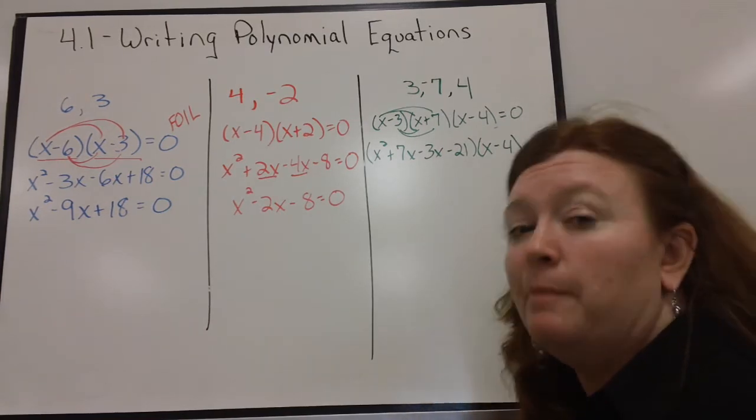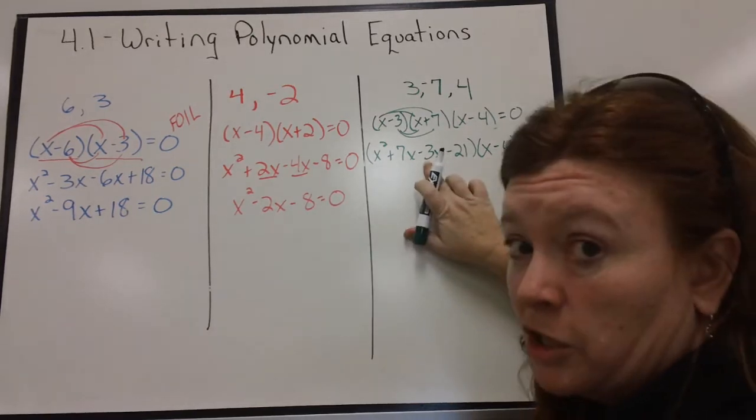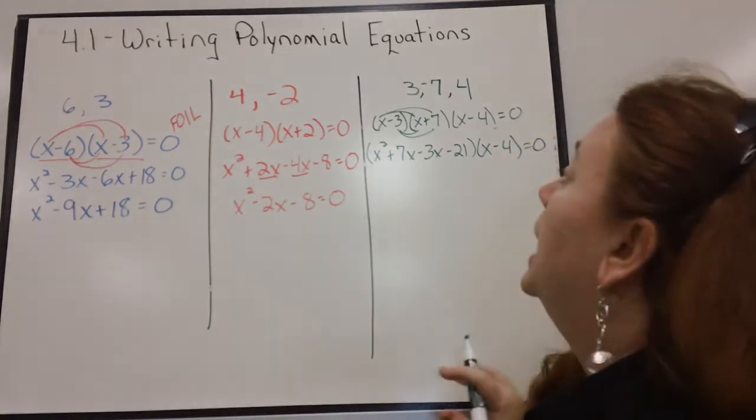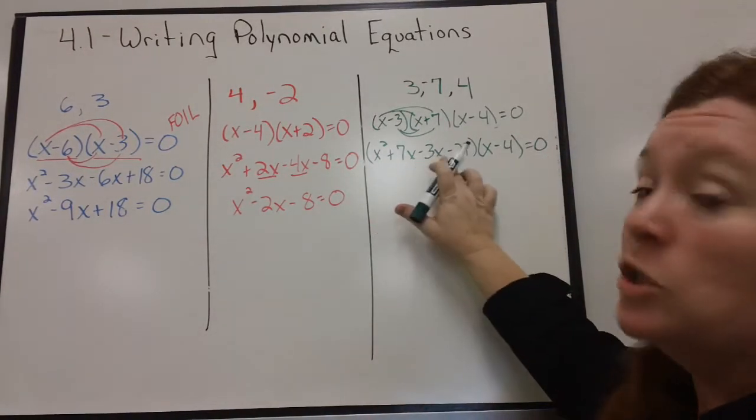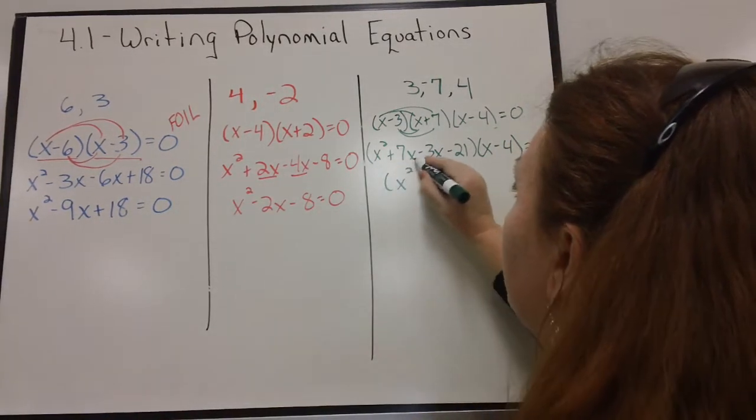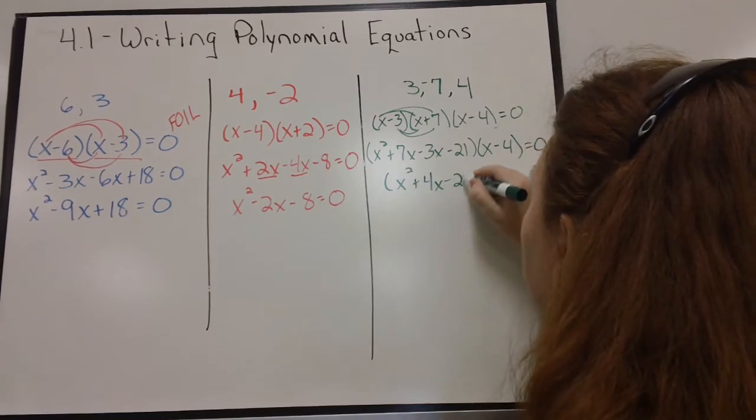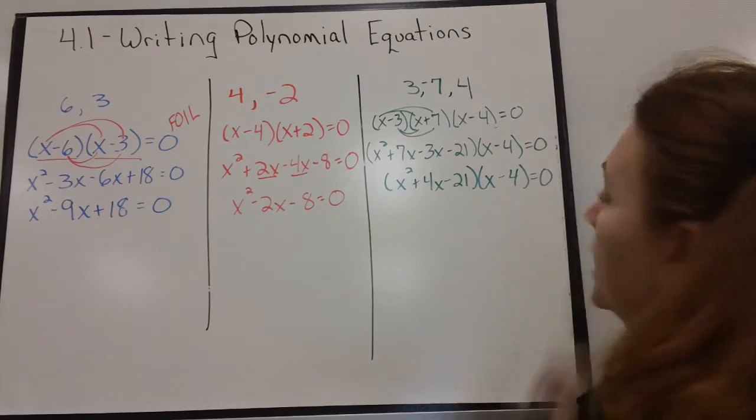Now, I have many students who will start to multiply this 4 term polynomial times this 2 term polynomial. I suggest to you to wait one more step. Let's combine these 2 terms and simplify it first. 7X minus 3X is 4X. And now, I can go ahead and multiply.